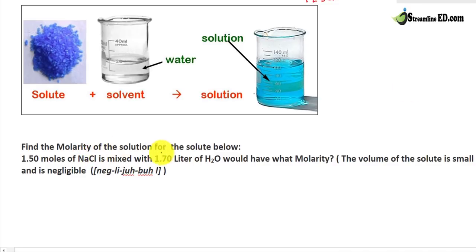Find the molarity of a solution for the solute below. In this case, we have 1.50 moles of sodium chloride, which is NaCl. It is mixed with 1.70 liters of water, which is your solvent. This is your solute.